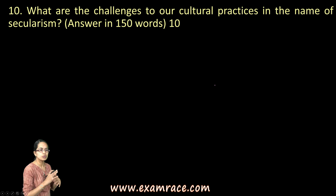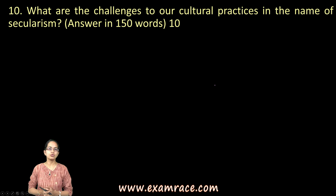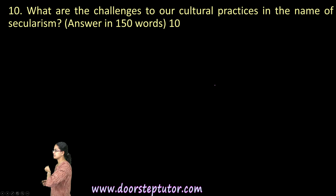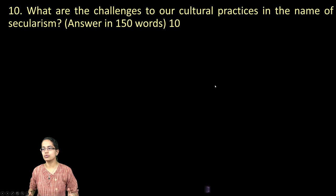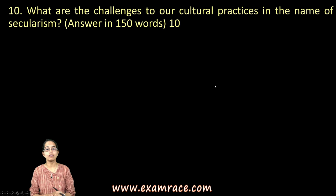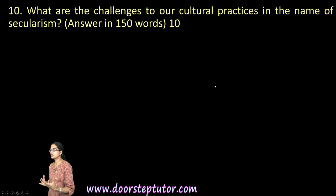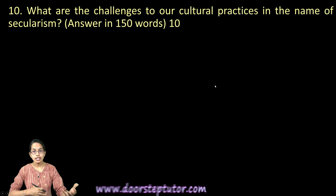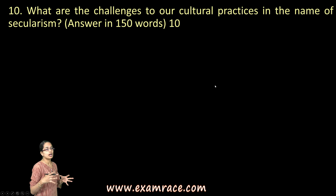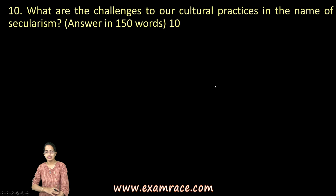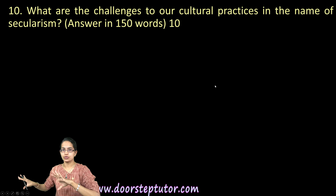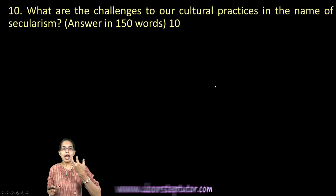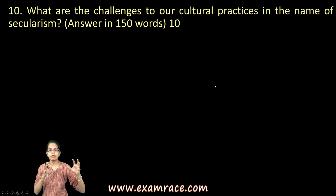The last question asks about the challenges to cultural practices in the name of secularism. Constitutional challenges include issues like CAA, right to equality, animal rights, and practices like Jallikattu. Harmful cultural practices have also been addressed — for example, the Devadasi community faced a ban in 2018. On an individualistic level, there are restrictions on food choices and certain practices.